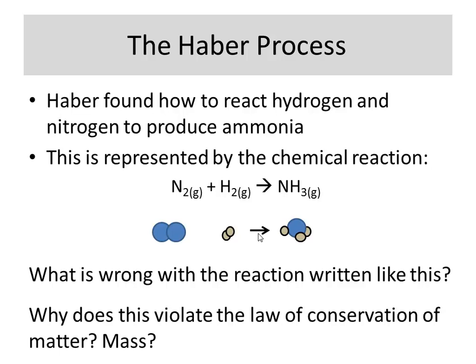So, there's something wrong with that. That violates the law of conservation of matter. And mass, because nitrogen and hydrogen weigh different. Nitrogen has an atomic mass of 14. Hydrogen has an atomic mass of 1. So, I start out with a mass of 28 plus 2, which is 30. And I end with a mass of 17. That can't happen. It violates the law of conservation of matter.